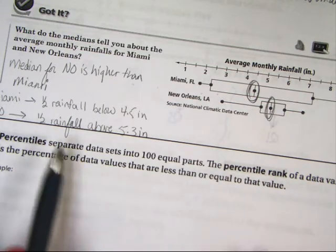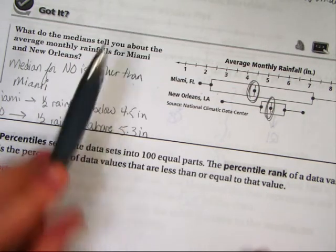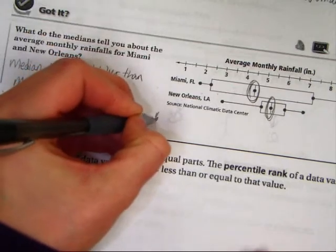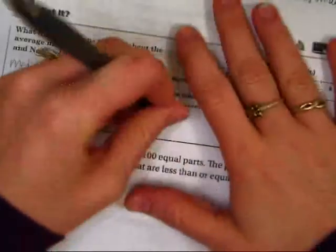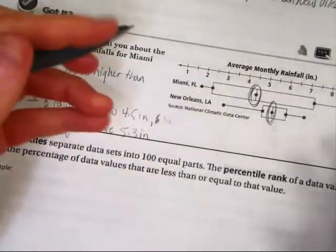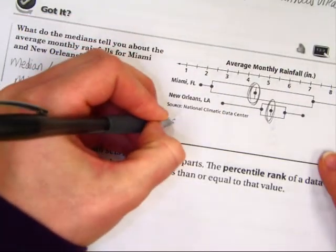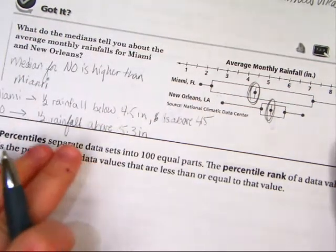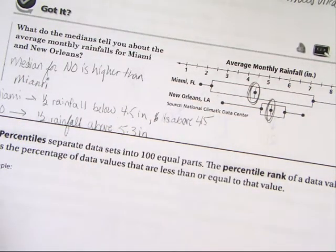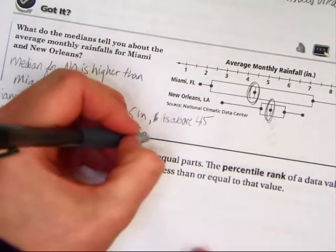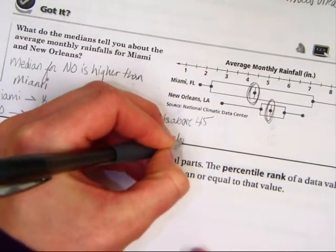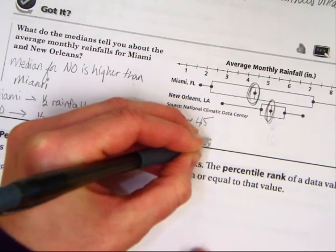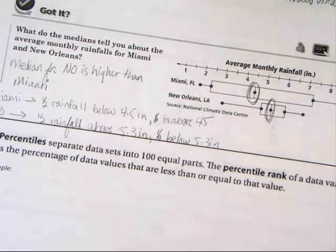What we could also say is not only in Miami is half the rainfall below 4.5, we could add that half must be, therefore, above 4.5 as well. Half is below, half is above. And in New Orleans, we could say the exact opposite too. If half is above 5.3, we could say half is below 5.3. So it's nice to be able to read the chart and understand a box-and-whisker graph and how much of the percents and stuff that they show.